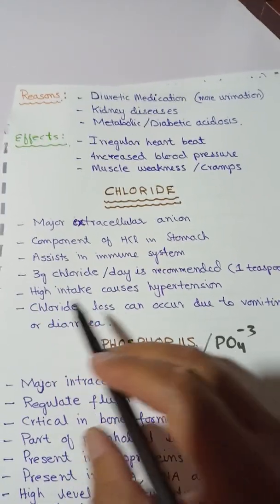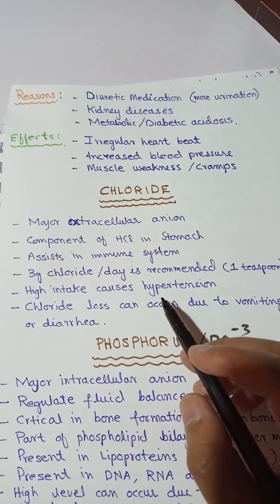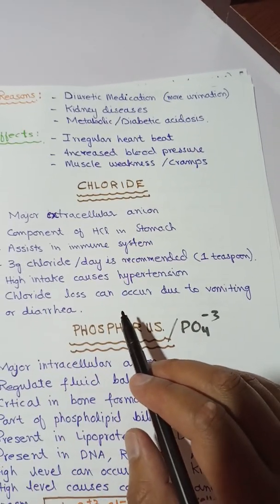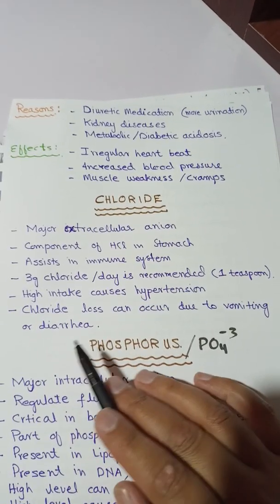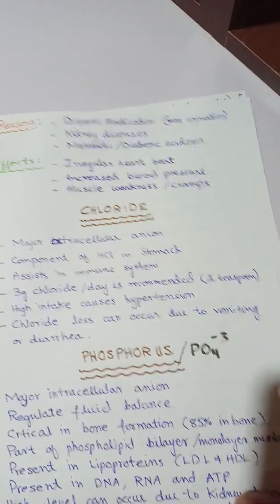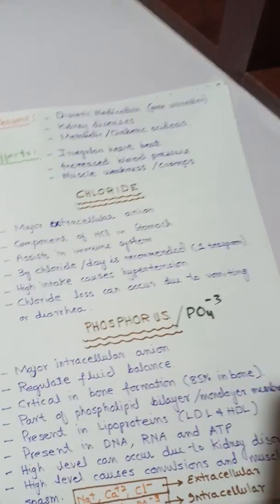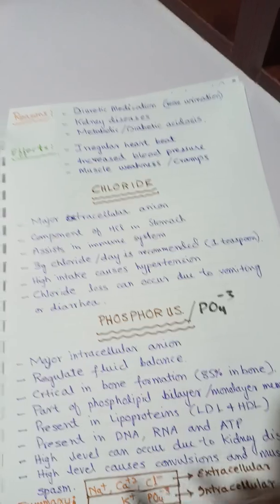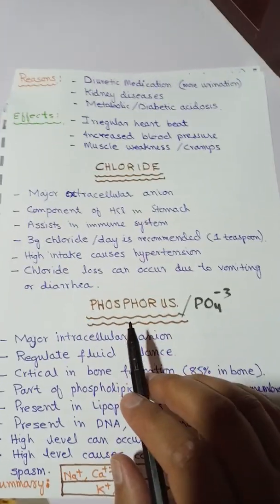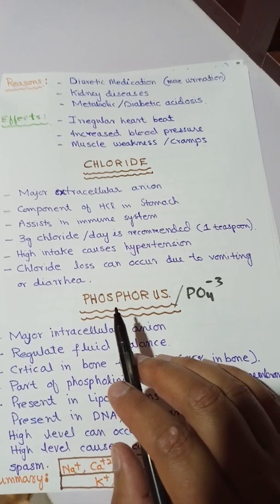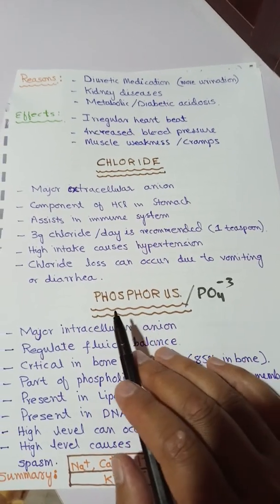High intake of chloride causes hypertension. Chloride loss can occur due to vomiting or diarrhea, similar to how sodium level decreases because of diarrhea or vomiting. The next important anion inside our body is phosphate ion, which may also be referred to in the form of phosphorus.